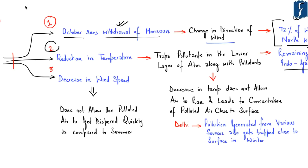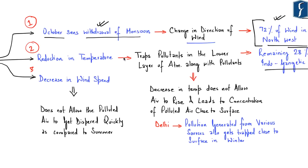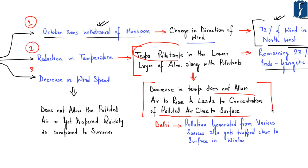The second reason is the reduction in temperature with the onset of winter. Decrease in temperature traps pollutants in the lower layer of the atmosphere and does not allow the air to rise, thereby concentrating polluted air close to the surface, especially in Delhi. This is further aided by various pollutants generated within Delhi from different sources, which also get trapped close to the surface in winter because of the reduction in temperature.